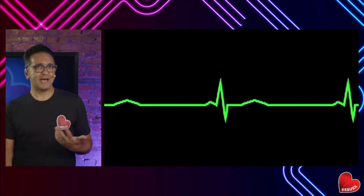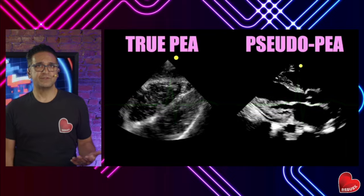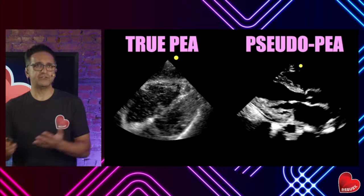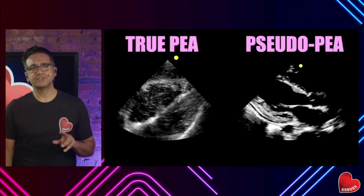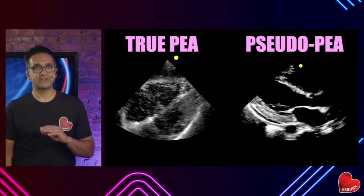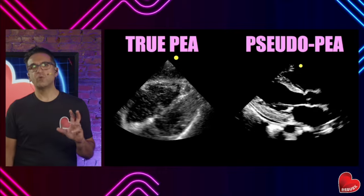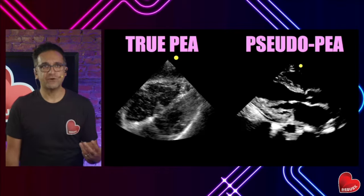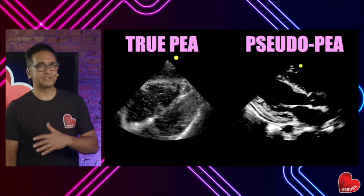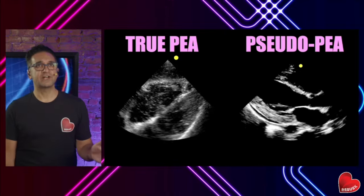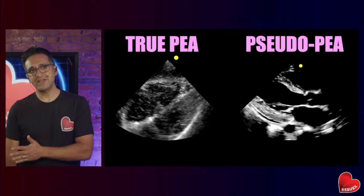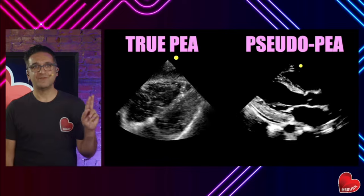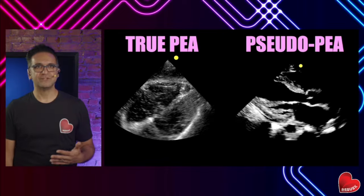When you see a PEA rhythm, it could be one of two things: true PEA versus pseudo-PEA. Are your fingers sensitive enough to detect whether there's cardiac standstill or a heart that's squeezing but not generating enough output? The person in true cardiac arrest versus the person in severe cardiogenic shock — the rhythm looks the same, and your fingers will feel the same.